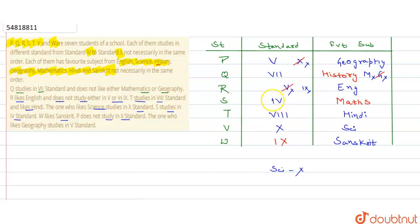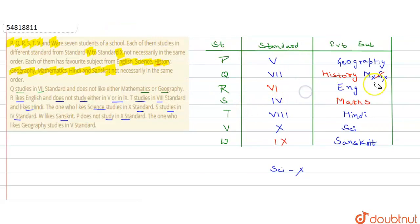4th to 10th में से: 4th हो गया, 5th हो गया, 6th हमारा कहीं नहीं आया. तो W का standard 6th होगा. अब हमारा table complete हो गया. बाकी की चीजें हटा देते हैं ताकि confusion न हो — table पूरी तरह complete हो गया.